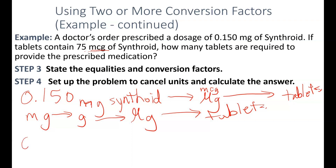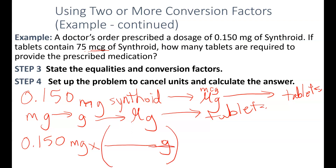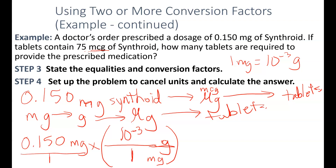Starting with 0.150 milligrams, we'll use a conversion factor to get from milligrams to grams as the first step. We're always multiplying by a fraction, so we want grams on the top and milligrams on the bottom. We need an equivalence between grams and milligrams. From our conversion factor, 1 milligram equals 10 to the negative third grams, so 10 to the negative third goes on top and 1 goes on the bottom.